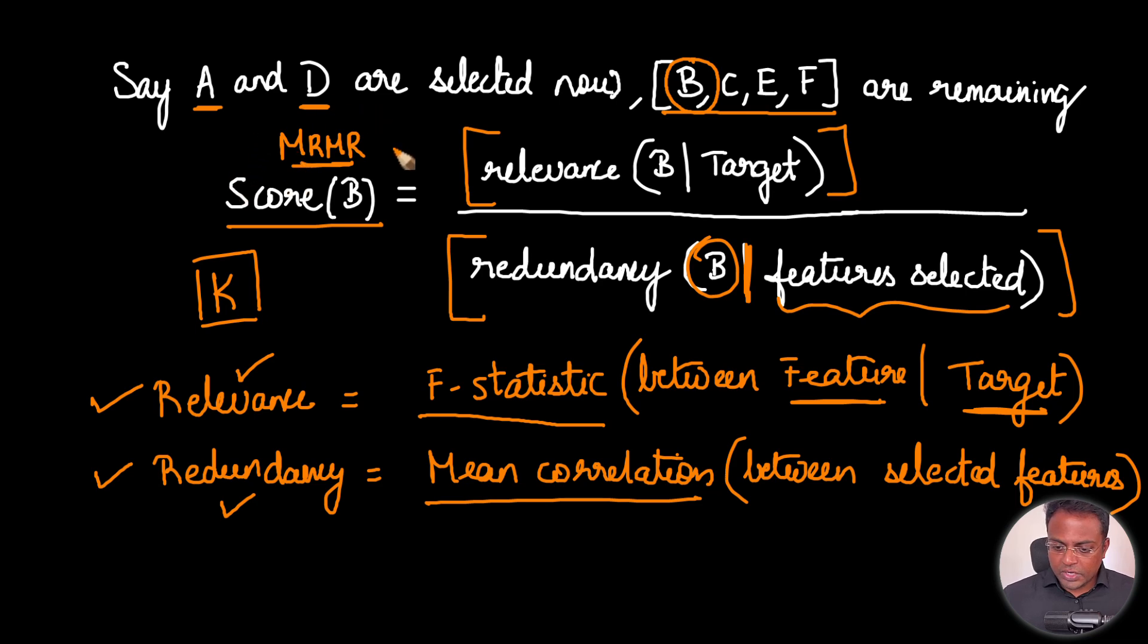In this version of MRMR, there could be multiple versions. You could come up with your own. Net-net, we want relevance on the numerator and redundancy on the denominator. Instead of F-statistic, you could also build a machine learning model that predicts the target as a function of the feature and see how the performance is. Likewise, you could think of some other metric besides correlation also. But in this one, for the sake of completeness, let's try to understand the F-statistic.